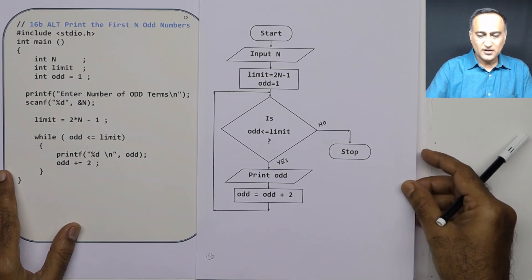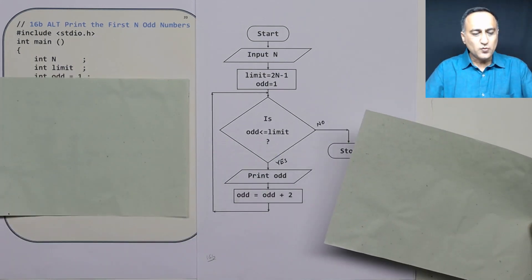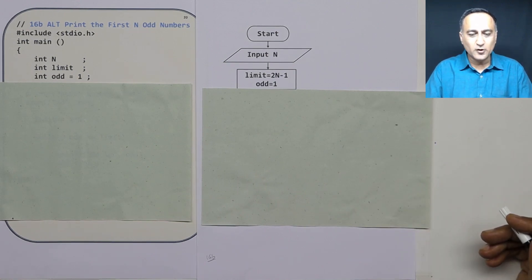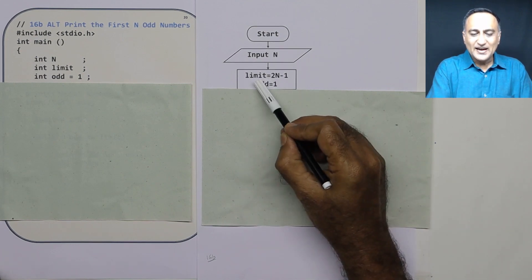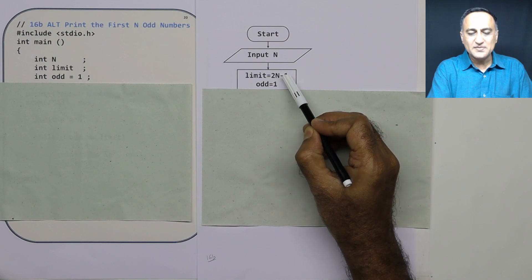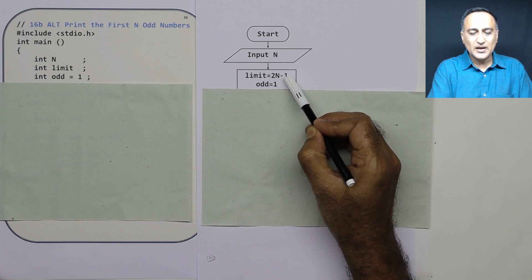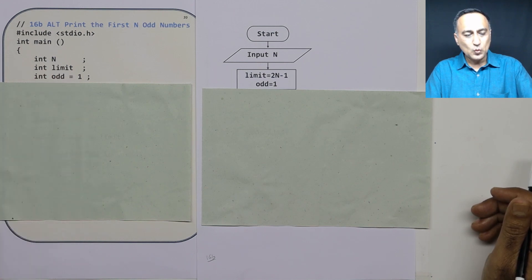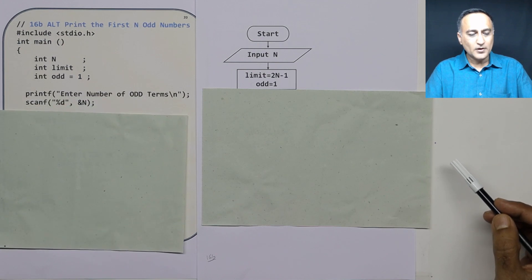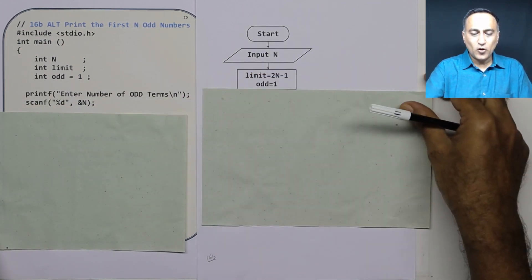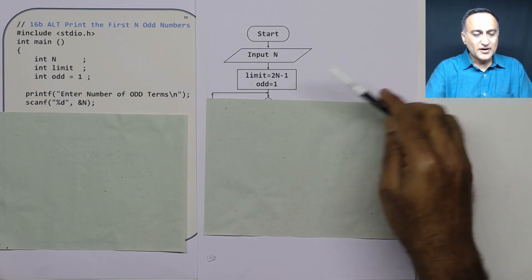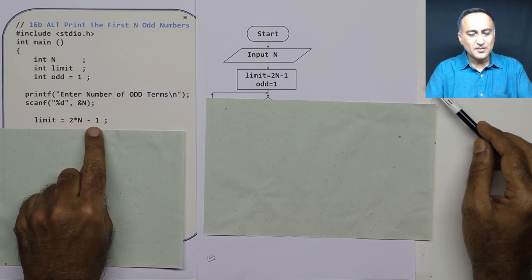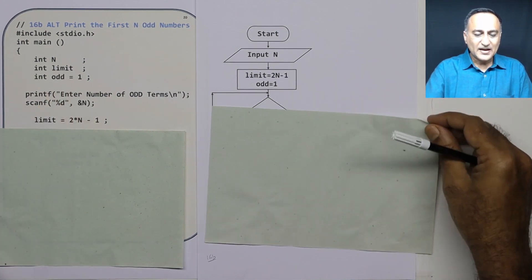In this alternative approach, most of the program is similar to what I explained earlier. The difference is I am calculating the last odd number using the formula: limit = 2 times n minus 1. So odd is equal to 1, and limit is 2n minus 1. I ask the user to input the value of n — enter the number of odd terms. Then I calculate limit = 2n minus 1. Odd is already 1, and then I come into the body of the loop.